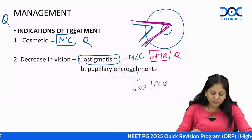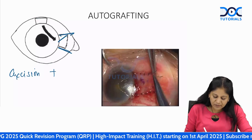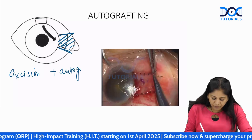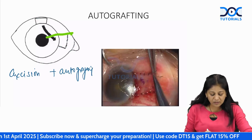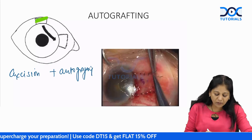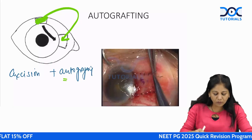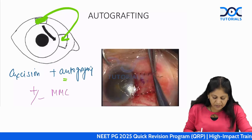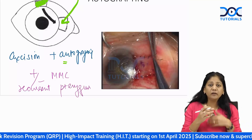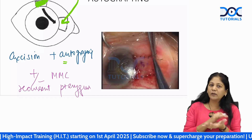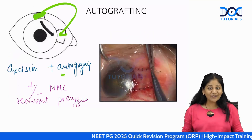Management of pterygium involves excision with conjunctival autografting to cover the bare sclera. Without autografting, recurrence occurs in about 70% of cases. Conjunctiva from the same eye is used — hence autografting. Mitomycin C is added especially in recurrent cases, placed under the conjunctival flap.